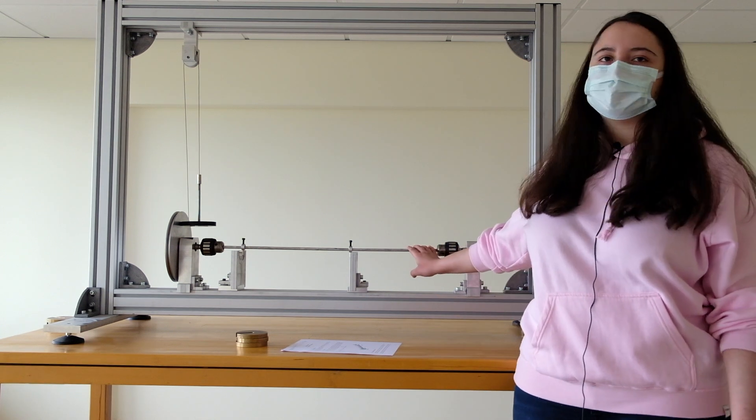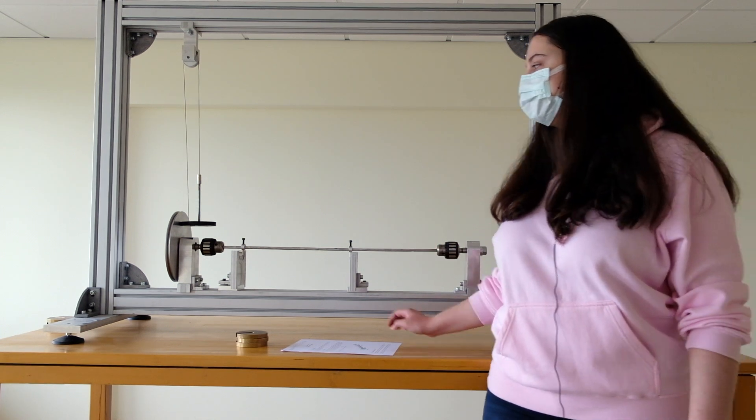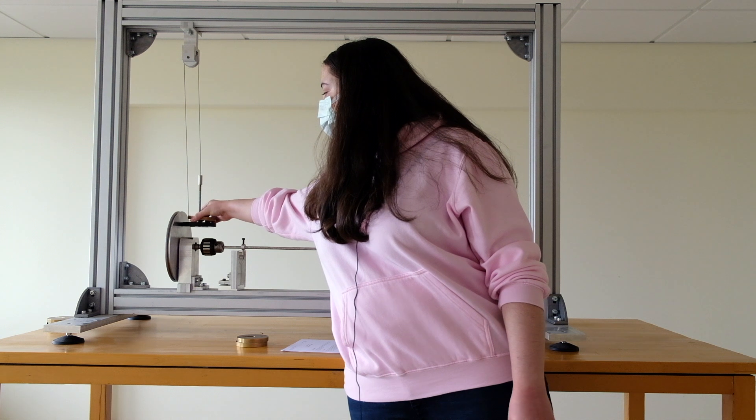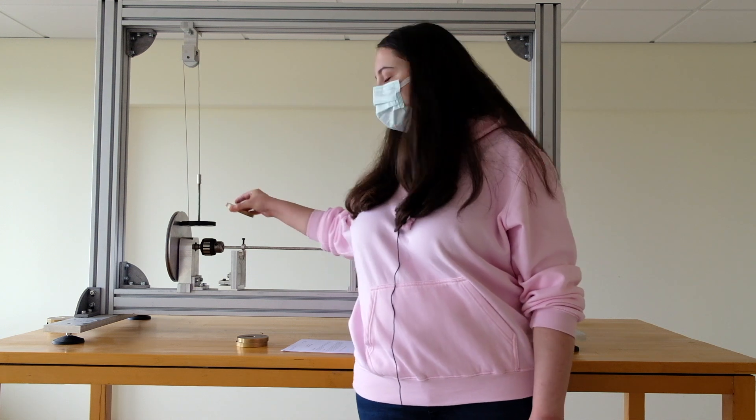You have a shaft here which you will be twisting using the pulley. You will apply the load using these weights and you will hang those weights on the pulley to twist the shaft.